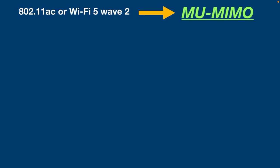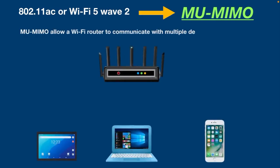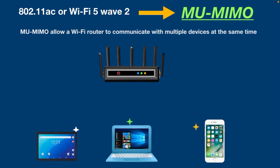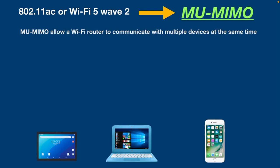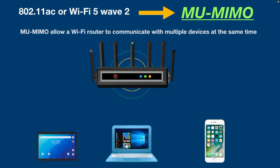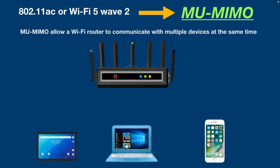In 2016, the 802.11ac Wave 2 wireless standard introduced Multi-User MIMO as a solution to this problem. What this technology does is allow a Wi-Fi router to communicate with multiple devices at the same time. Unlike Single-User MIMO, devices don't wait for signals, which also increases network efficiency.